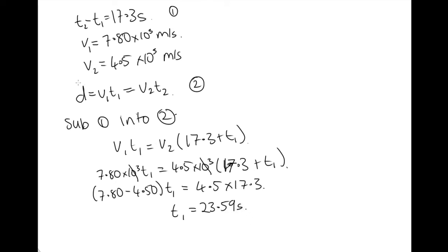Now, we're asked to find the distance d. The distance is given by v1 t1, so that equals 7.80 times 10 to the 3 times 23.59, which equals 1.84 times 10 to the 5 meters. Or we could write this as 184 kilometers. So we've solved that one.